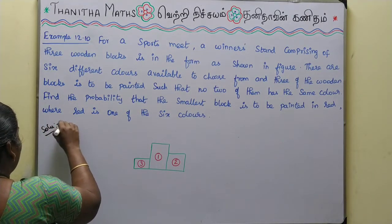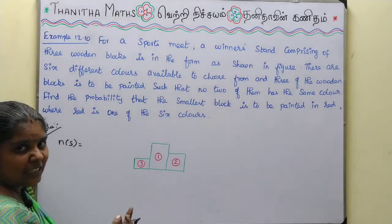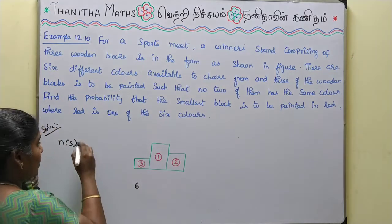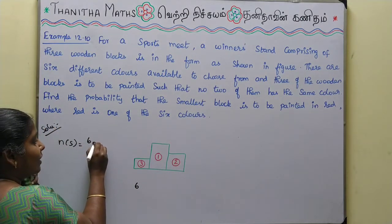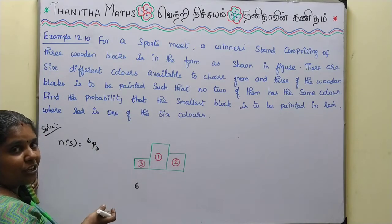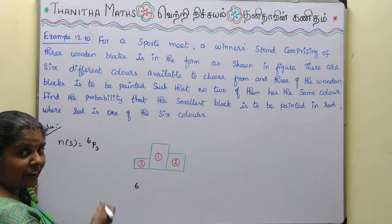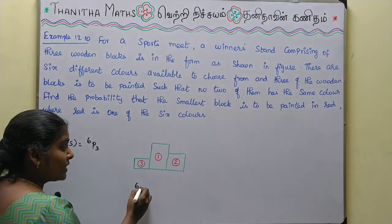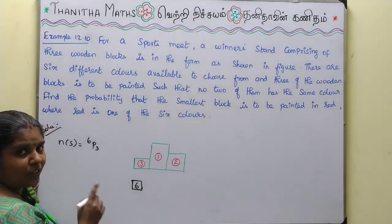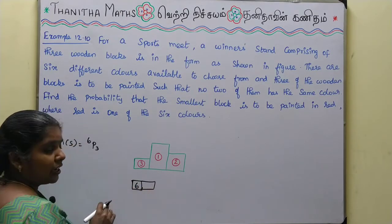Solution: n of S — now we have six colors, so from six colors we can use three colors. Repetition is not allowed. In the first block we can use six colors, then in the second block we can also choose from the remaining colors.